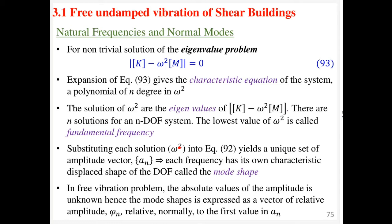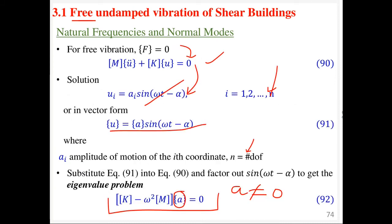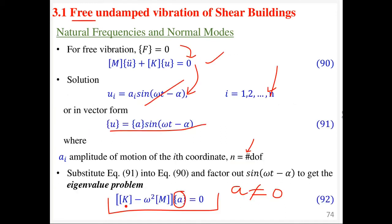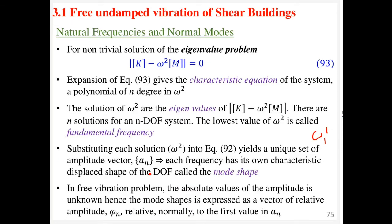Once you have the eigenvalues, substituting each ω² back into the eigenvalue problem gives a unique set of amplitude vectors. For ω₁², you get one set for A₁; for ω₂², another set. This means each frequency has its own characteristic displaced shape of the degrees of freedom, which we call the mode shape of vibration. The displacement U at each floor level is the amplitude of the motion at that coordinate.